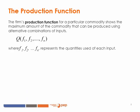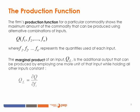The firm's production function for a given commodity shows the maximum quantity that can be produced of a commodity using an alternative combination of different inputs. The production function is represented by Q, and in this production function F1, F2 through Fn represent the quantity used of each input. The marginal product of an input, expressed here as QFi, is the additional output the producer can produce by using one additional unit of that specific input while all other inputs are maintained constant. It is described by the derivative of the production function with respect to that specific input.